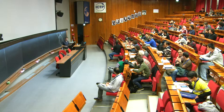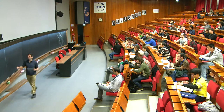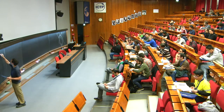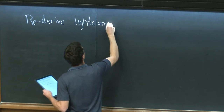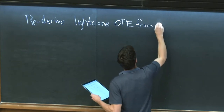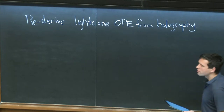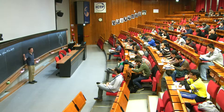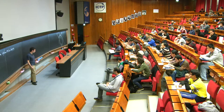I want to re-derive the light cone OPE directly from holography. We've gotten the ANEC two different ways: one from the light cone OPE and one by studying the propagation of signals through anti-de-Sitter. The idea now is to explain why those two things had to agree and exactly what the relationship is.